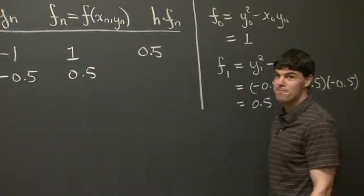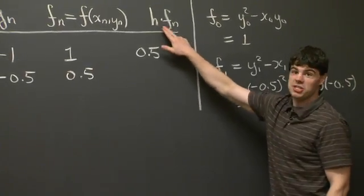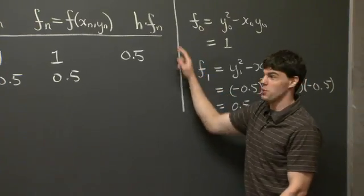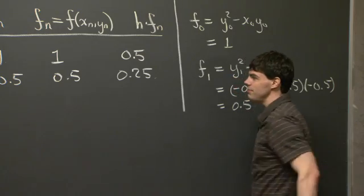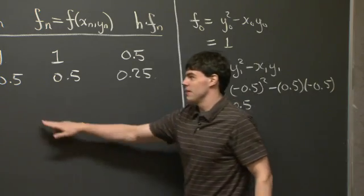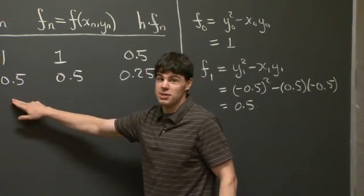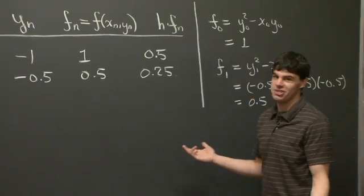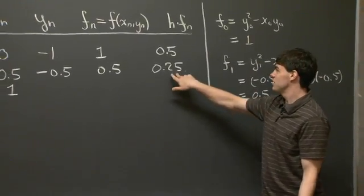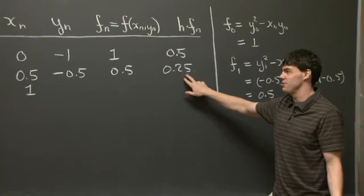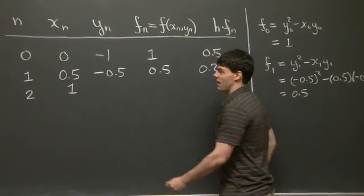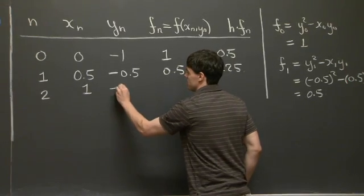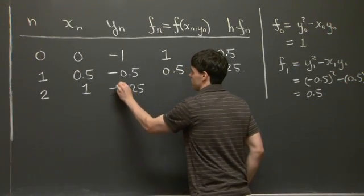So we have 0.5 in this square now. And then h times 0.5 is (0.5)², which is just 0.25. Now y_2 is just going to be y_1 + h·f_1. So we know h·f_1 is 0.25. And y_1 is just -0.5. So this is going to be -0.25.